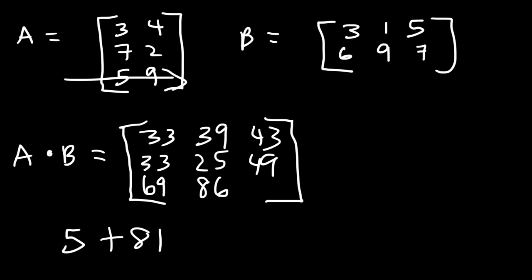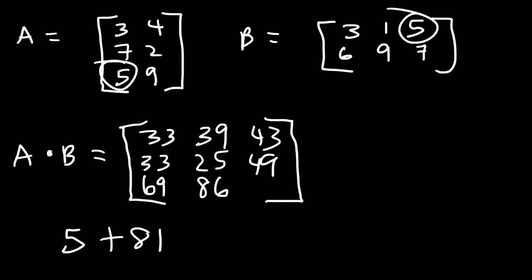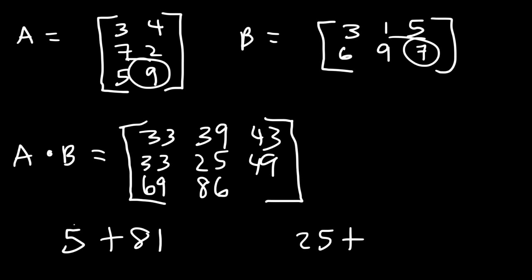Next we have row 3 times column 3. So we have 5 times 5 which is 25, and then 9 times 7 which is 63. So 25 plus 63 is 88.